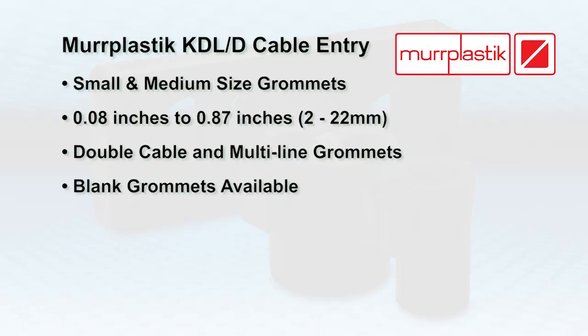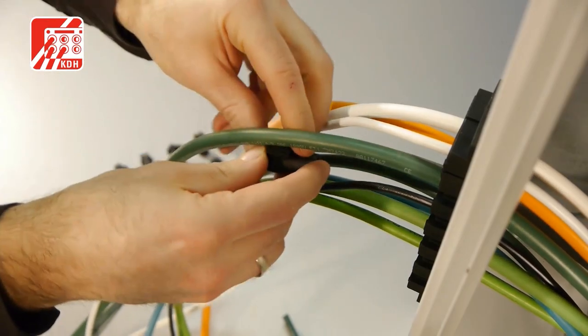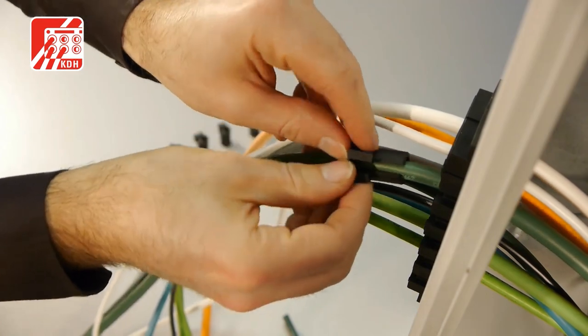Small and medium-sized grommets accept cable diameters from 0.08 to 0.87 inches. Double cable and multi-line grommets accept more than a single cable. A blank grommet is also available for any unused medium openings in the grommet block.